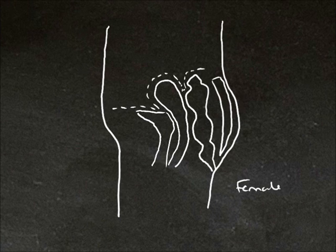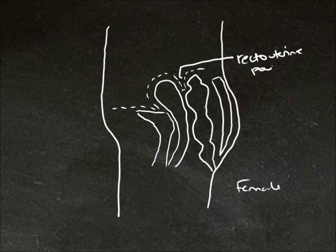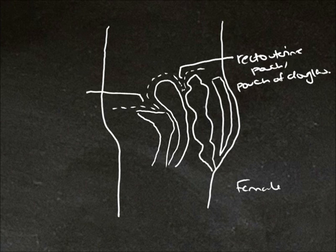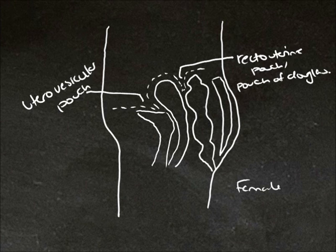Here I've drawn a sagittal section of a female and where the dotted line is outlines two pouches. Here is the pouch we talked about known as the retrouterine pouch, also known as the pouch of Douglas. There's a second pouch between the bladder and the uterus and this is known as the uterovesicular pouch. And here again revealed we have the rectum which is anterior to the sacrum but posterior to the uterus and the bladder.